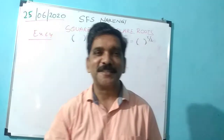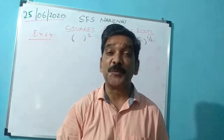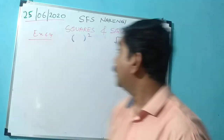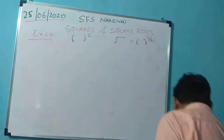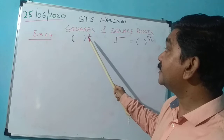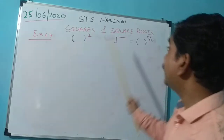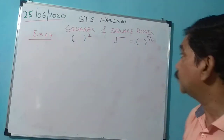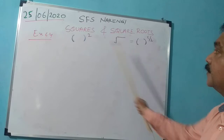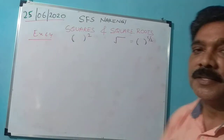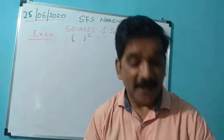Good morning, friends. We are doing squares and square roots. A square means the exponent is 2, and square root means the exponent is 1/2. I have shown it here — this is square, this is square root. They are opposite to each other.